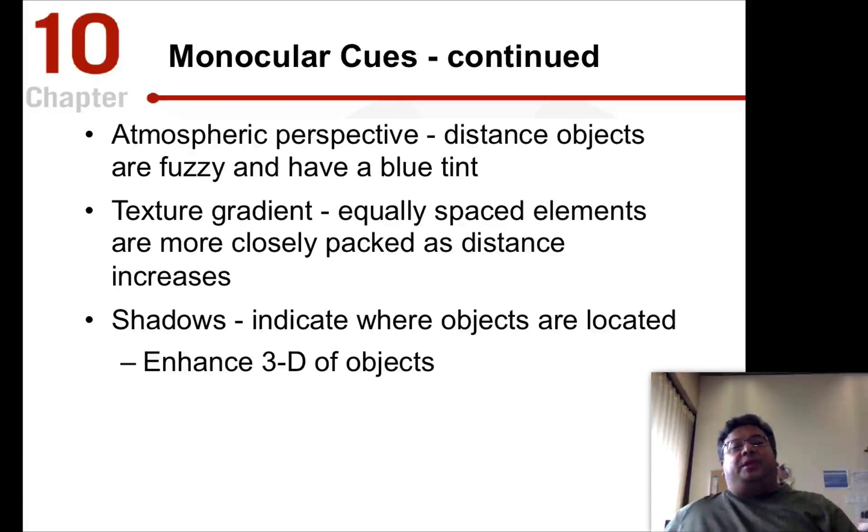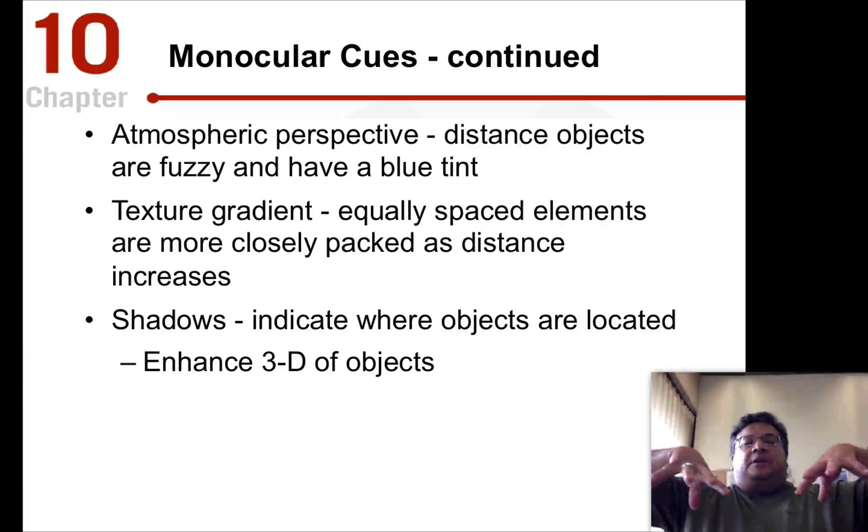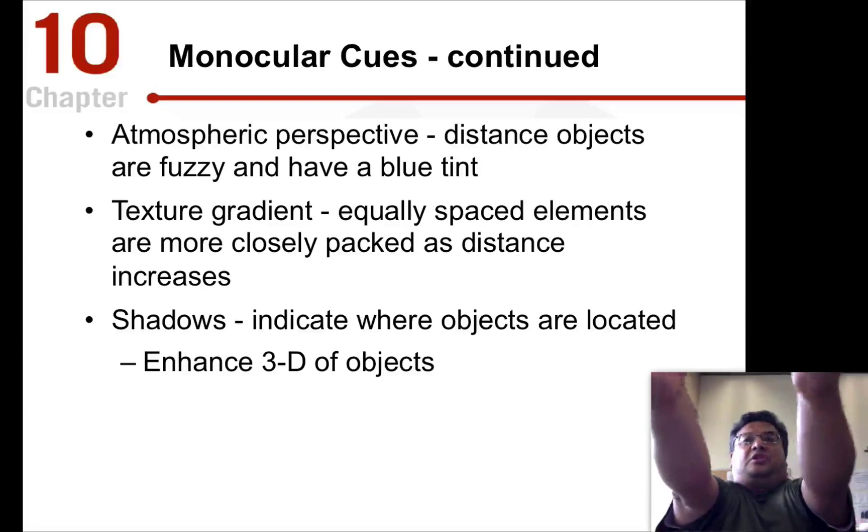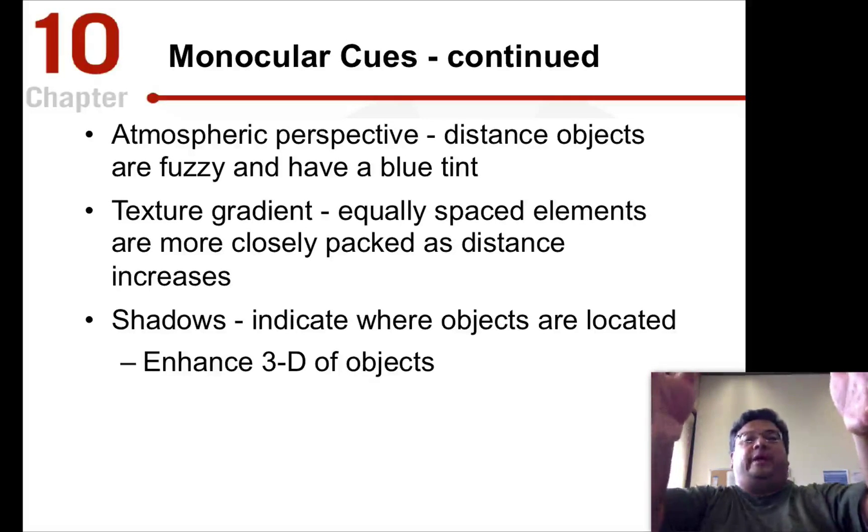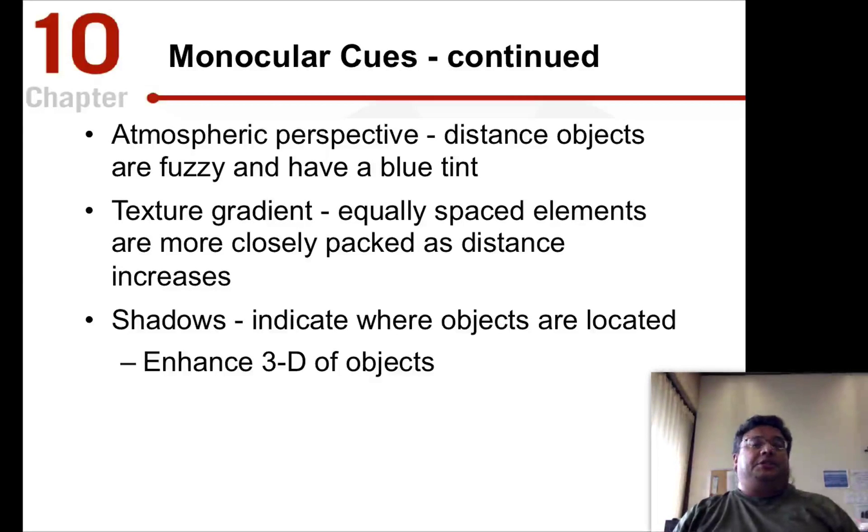Texture gradient, if you have a bunch of, like say, a giant group of people, like at a concert or some sort of outdoor event, the people that are closest to you are going to be more separated from each other than the people way in the distance. They're going to look more crunched together as you go further away, and we use that texture gradient also to judge distance.